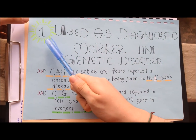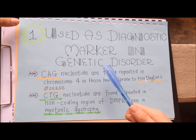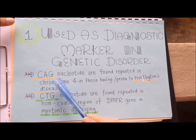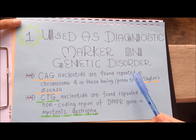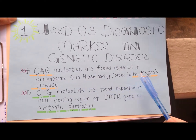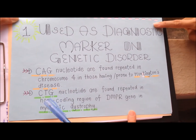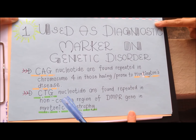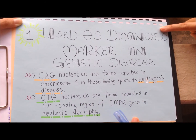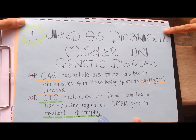Firstly, it can be used as a diagnostic marker in genetic disorders. For example, CAG nucleotides are repeatedly found in chromosome 4 in those having or prone to Huntington's disease. Secondly, CTG nucleotides are repeatedly found in the non-coding region of the DMPK gene in myotonic dystrophy.